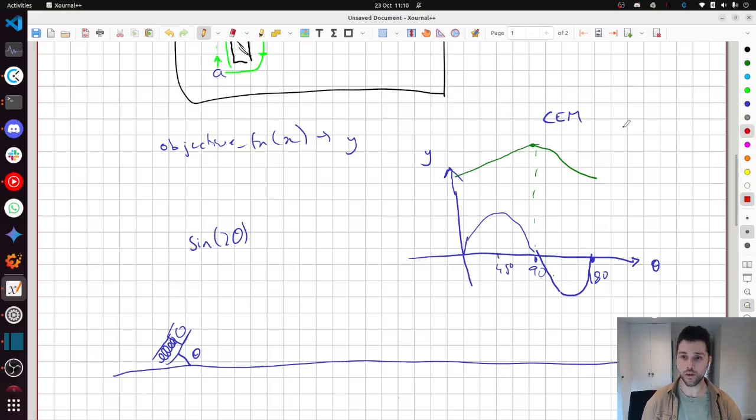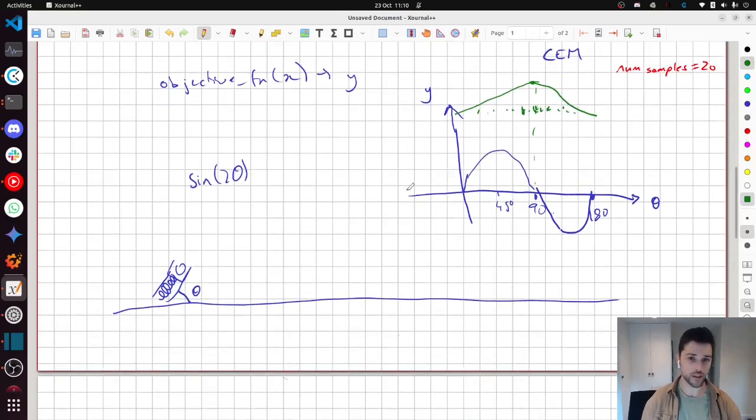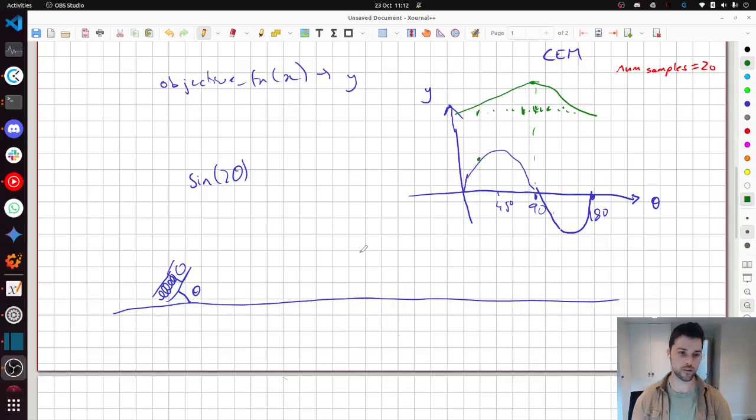And then what we'll have is a hyperparameter called number of samples. And that's going to be fixed throughout the algorithm. Say it's 20. And what we'll say is let's randomly draw 20 samples from this distribution. So it'll be denser around the middle, of course. And then we are going to run the experiment for each of these points. So we're going to take this angle here, which is maybe 30 degrees. We're going to set this angle up to 30 degrees and fire the ball off, see where it lands and measure the answer of where it lands. And then we're going to plot that.